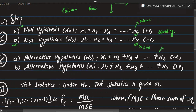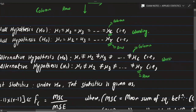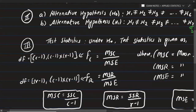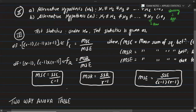The alternative hypothesis states that at least one pair of means is not equal. We write the wording as just the opposite of the null hypothesis. Then we write the formula for the calculated F value, which is MSC upon MSE.